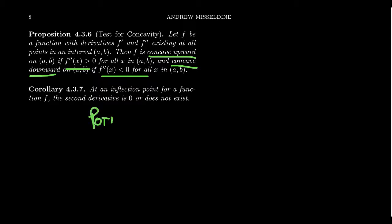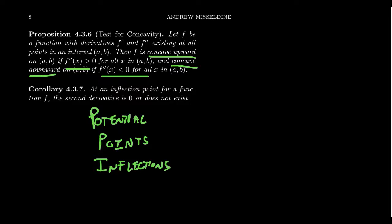We're going to call those potential points of inflection — PPIs for short. A PPI is a potential point of inflection. The reason we say that is that critical numbers are not always extrema, but every extremum is a critical number — the same is true for inflection points. Points of inflection are going to be critical numbers of the first derivative, making the second derivative equal to zero or does not exist. But not every critical number of the first derivative will be a point of inflection, so we call them PPIs.